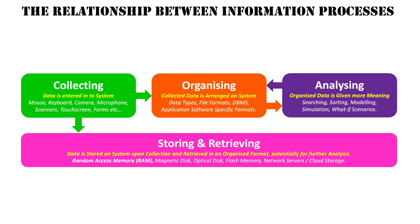Data goes into RAM — RAM is where all live data goes, so when data is initially entered into a system, RAM is storing it at that point. When you save it to something such as a magnetic disk, optical disk, flash memory, or a server, it is saved into permanent storage, which can then be retrieved later. So when we collect data, it first has to be stored on the system, and then it is retrieved so we can organize it.